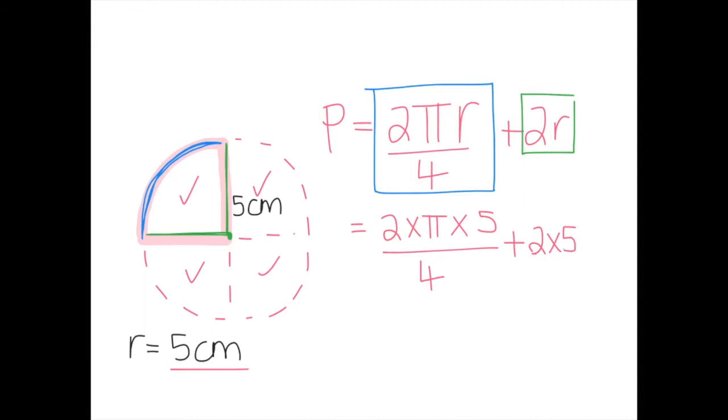Which again is still that blue section and that green section. Using my calculator, 2 times π times 5 equals 31.4159, divided by 4, plus 2 times 5 is 10.